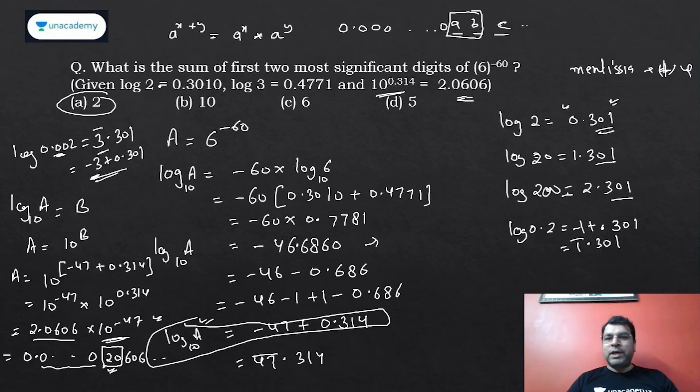The question was not tough if you follow the process of logs, but the log concepts should be clear. All the values are given to you: log 2, log 3, 10^0.314. This is how this question was solved. Quite a good question—in terms of logs, this is one of the most difficult questions. Thank you very much, we will see you again. Bye bye.